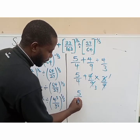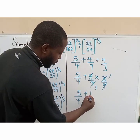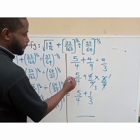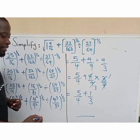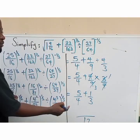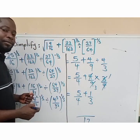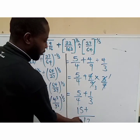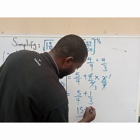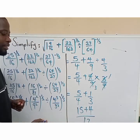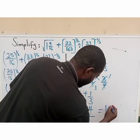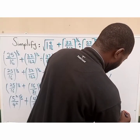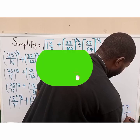Now let's find the LCM of this. The LCM of 4 and 3 is 12. So: 4 goes into 12 three times — 3 multiplied by 5 gives 15; and 3 goes into 12 four times — 4 multiplied by 1 gives 4. That gives us 15 plus 4 all over 12, which is 19 over 12. And 19 divided by 12 gives us 1 whole number 7 over 12.